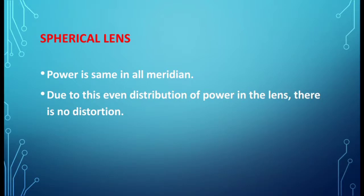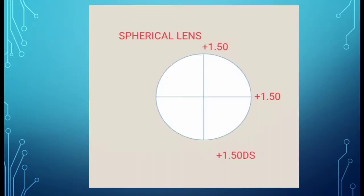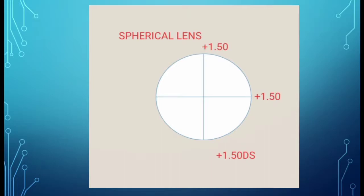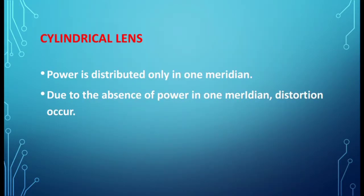This is an example for spherical lens. The two principal meridians are shown. This example has plus 1.50 diopter spherical power, so both meridians have the same power. In a cylindrical lens, the power is present only in one meridian.